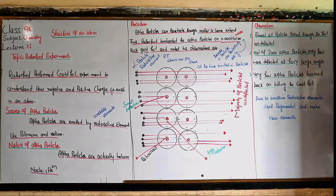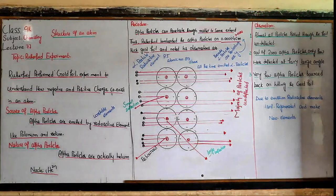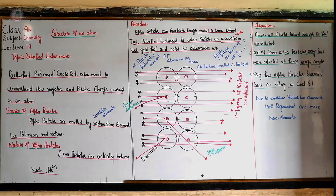Today we discuss about the structure of an atom, lecture number 77, which is related to the Rutherford experiment. In the previous lecture, we discussed introductions, discoveries, and some other models of the scientists, like the discovery of electrons, discovery of protons, and discovery of neutrons.